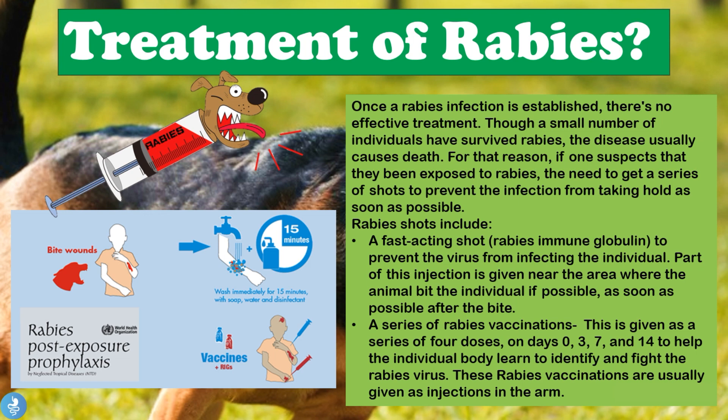The rabies shots include a fast-acting shot called the rabies immune globulin, which helps to prevent the virus from infecting the individual. Part of this injection is given near the area where the animal bit the individual, as soon as possible after the bite. Patients will also receive a series of rabies vaccinations given as four doses on days 0, 3, 7, and 14, to help the individual's body learn to identify and fight the rabies virus. These vaccinations are usually given as injections in the arm.